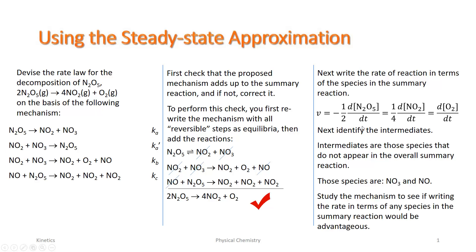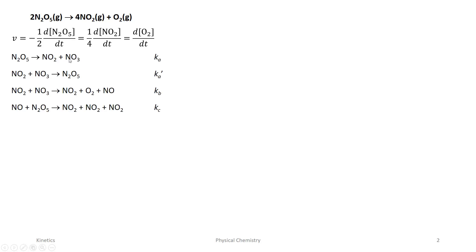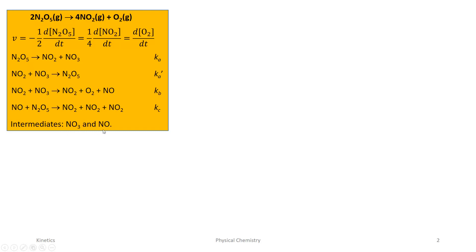We can derive a rate law by selecting any one of the three chemicals in the summary reaction to focus on, but as we shall see, some are easier to work with than others. Let's figure out beforehand which is possibly the easiest of these three rates to work with to derive our overall rate law. Here's our summary reaction, the three different chemicals we could derive an overall rate for, the mechanism, and our identified intermediates.